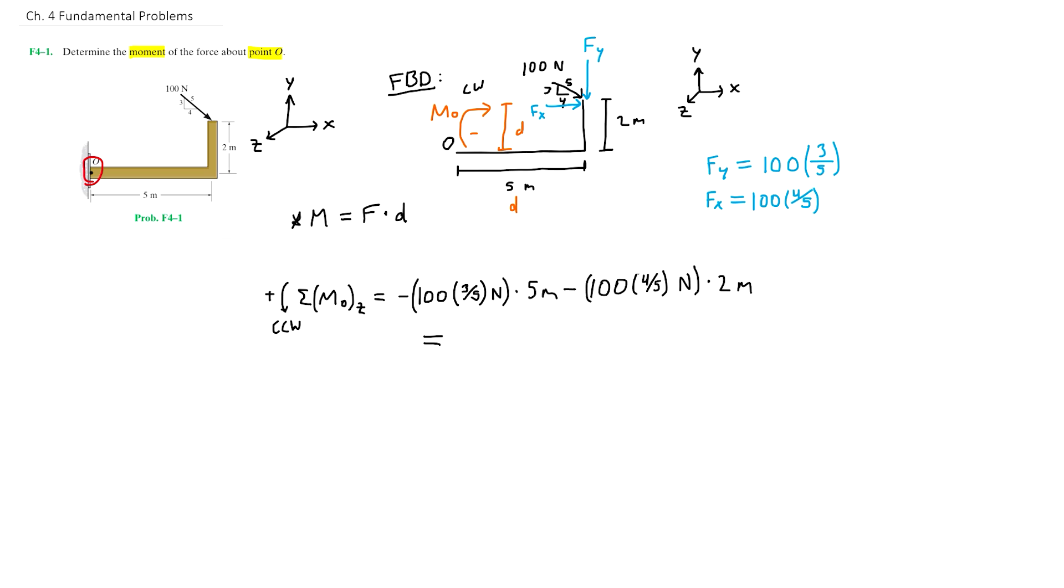So simplifying this out, this moment on the left here is negative 300 newton meters, minus multiplying this moment on the right here we get 160 newton meters. So finally, negative 300 minus 160 is negative 460 newton meters. Hence, the moment of the force about point O, Mo, is equal to negative 460 newton meters.